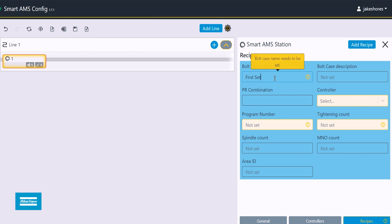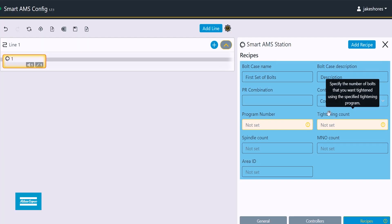This allows you to efficiently implement error proofing into your production while also gaining the ability to collect all of the tightening data to analyze and store in a database.